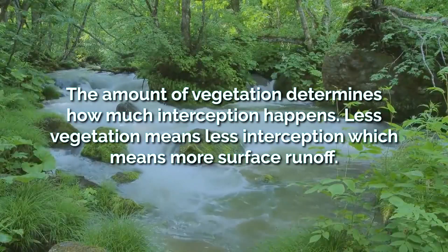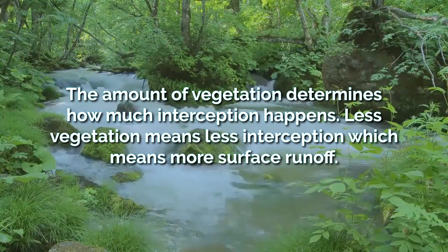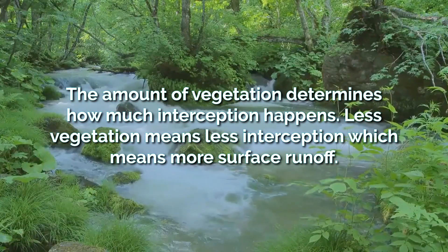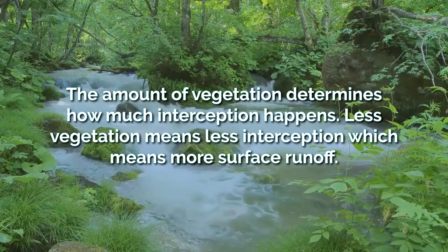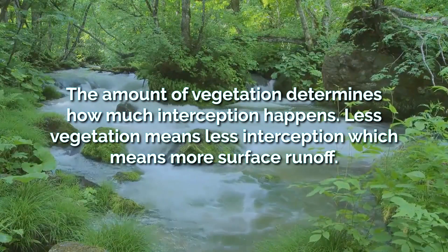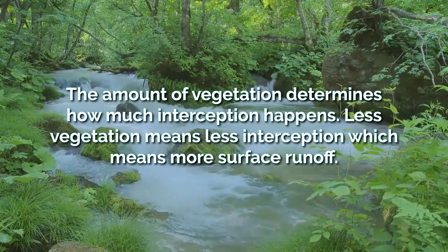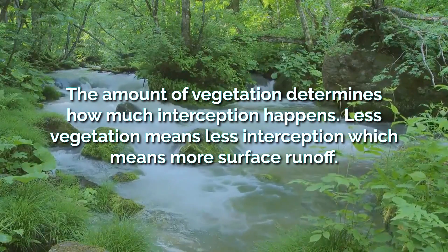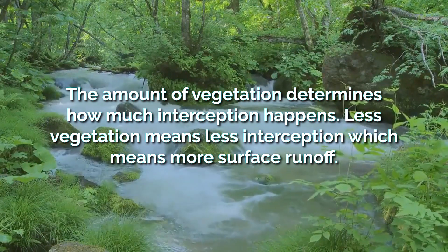The amount of vegetation determines how much interception happens. If there is less vegetation, less interception occurs, meaning there is more surface runoff.